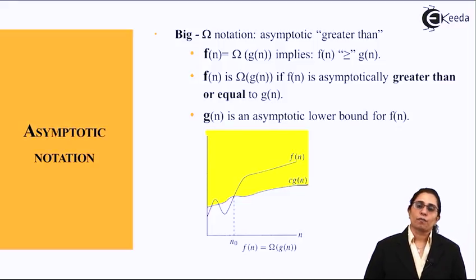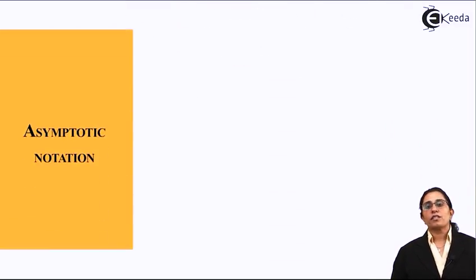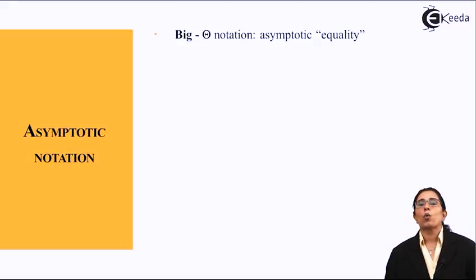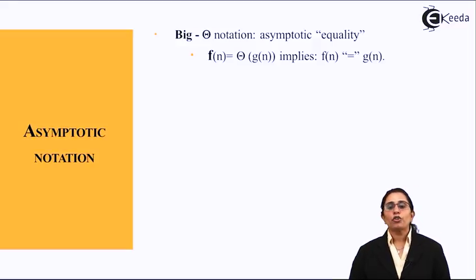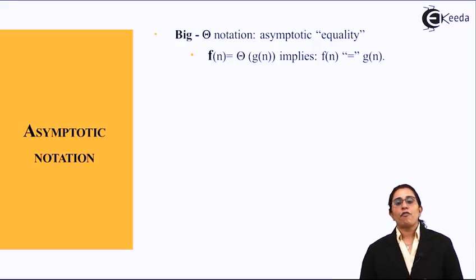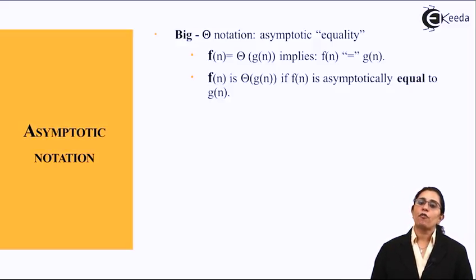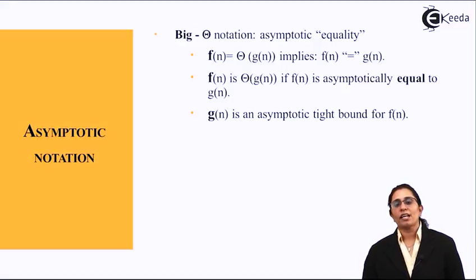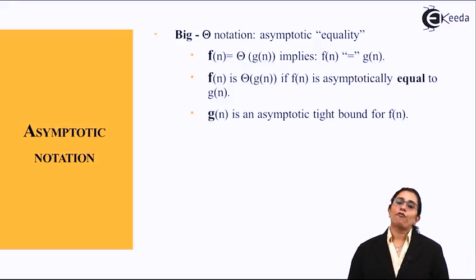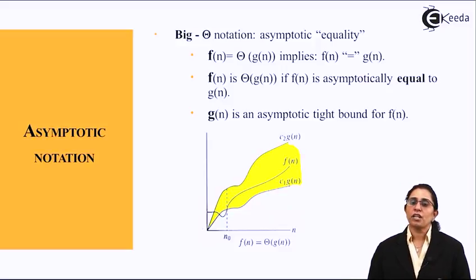The third case is asymptotic Theta notation, which represents asymptotic equality — the function and the growth are equal; both grow equally. f(n) is Θ(g(n)) if f(n) is asymptotically equal to g(n), and g(n) is an asymptotic tight bound for the function. As shown in the graph, the function and the growth of the function are tightly bound.